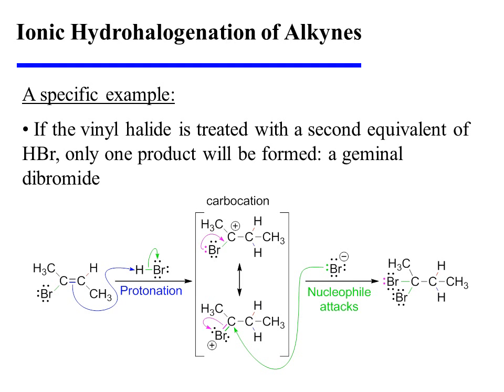If a second equivalent of HBr is used, the vinyl bromide can be protonated. This protonation provides only one carbocation — the one that is resonance stabilized by its adjacent bromine. In the second step, bromide attacks the electrophilic carbon, the one that has carbocation character, and a geminal dibromide is formed as the sole reaction product.